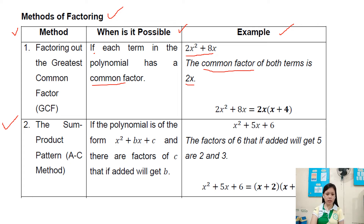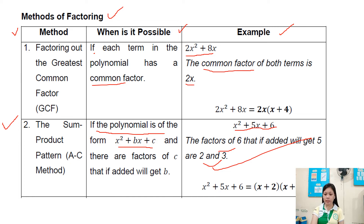Method 2: the sum-product pattern. This is possible if the polynomial is of the form x squared plus bx plus c and there are factors of c that if added will give b. For example, x squared plus 5x plus 6: the factors of 6 that add up to 5 are 2 and 3, since 2 times 3 equals 6 and 2 plus 3 equals 5. The result is x plus 2 times x plus 3.